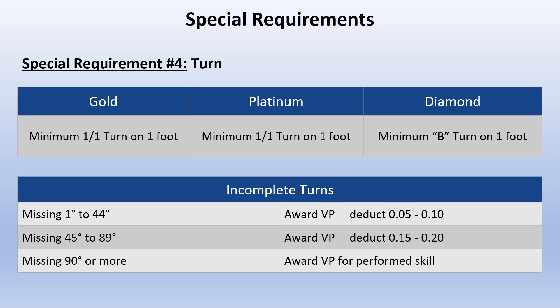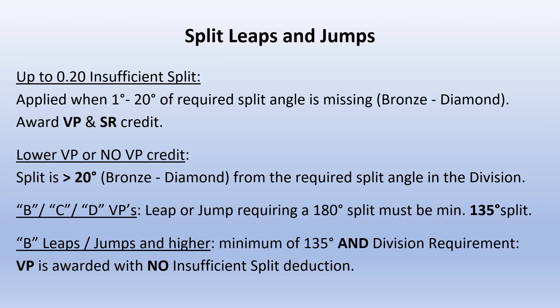Special Requirement 4 is a turn — a minimum of a full turn on 1 foot for Gold and Platinum, and a minimum of a B turn on 1 foot for Diamond. When a turn is missing 1 to 44 degrees, award the value part and deduct 0.5 to 1 tenth for incomplete turn. Missing 45 to 89 degrees: award the value part and deduct 1.5 to 2 tenths for incomplete. Missing 90 degrees or more: award the value part for the performed skill. For split leaps and jumps, up to 2 tenths insufficient split is applied when 1 to 20 degrees of the required split angle is missing — award the value part and special requirement credit.